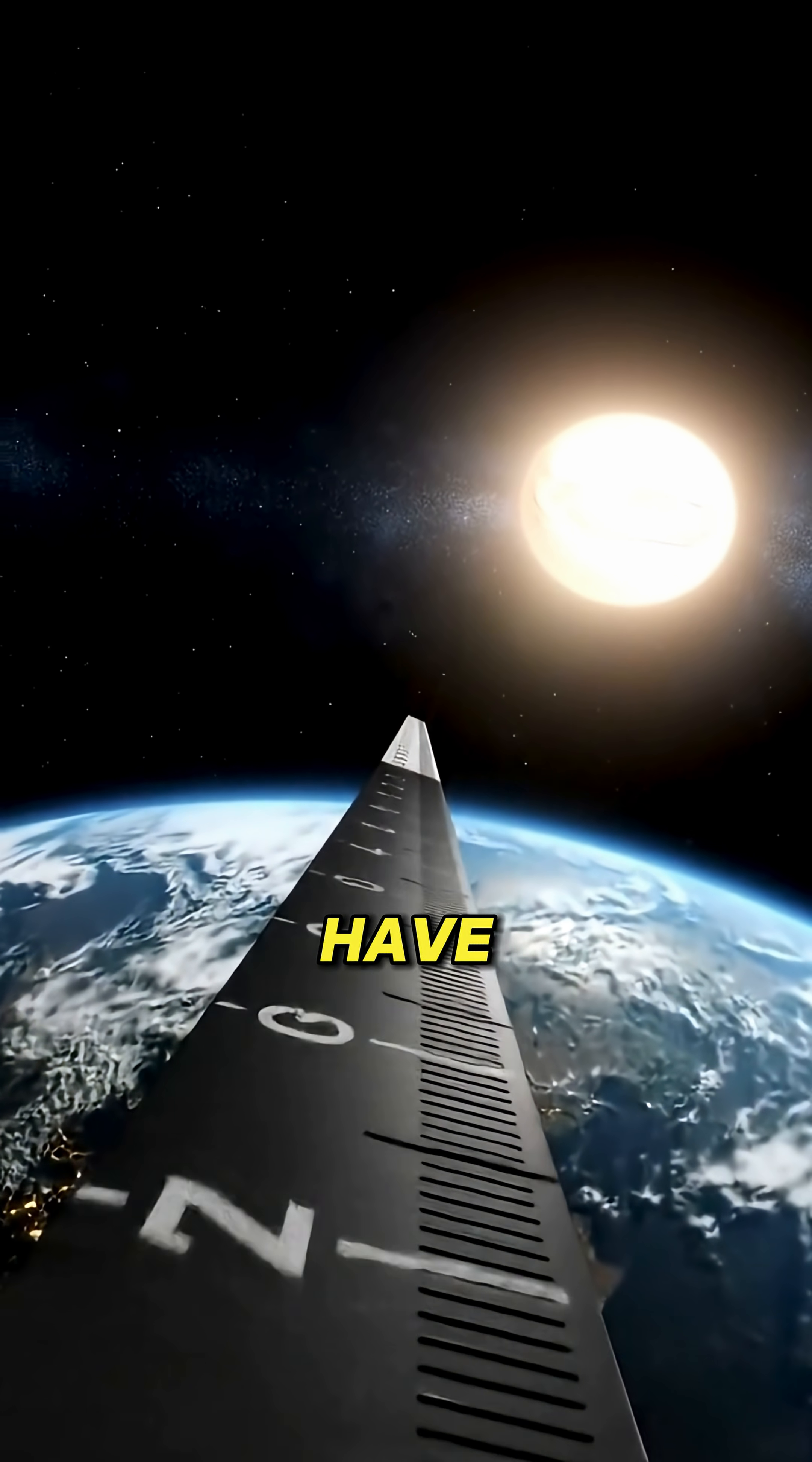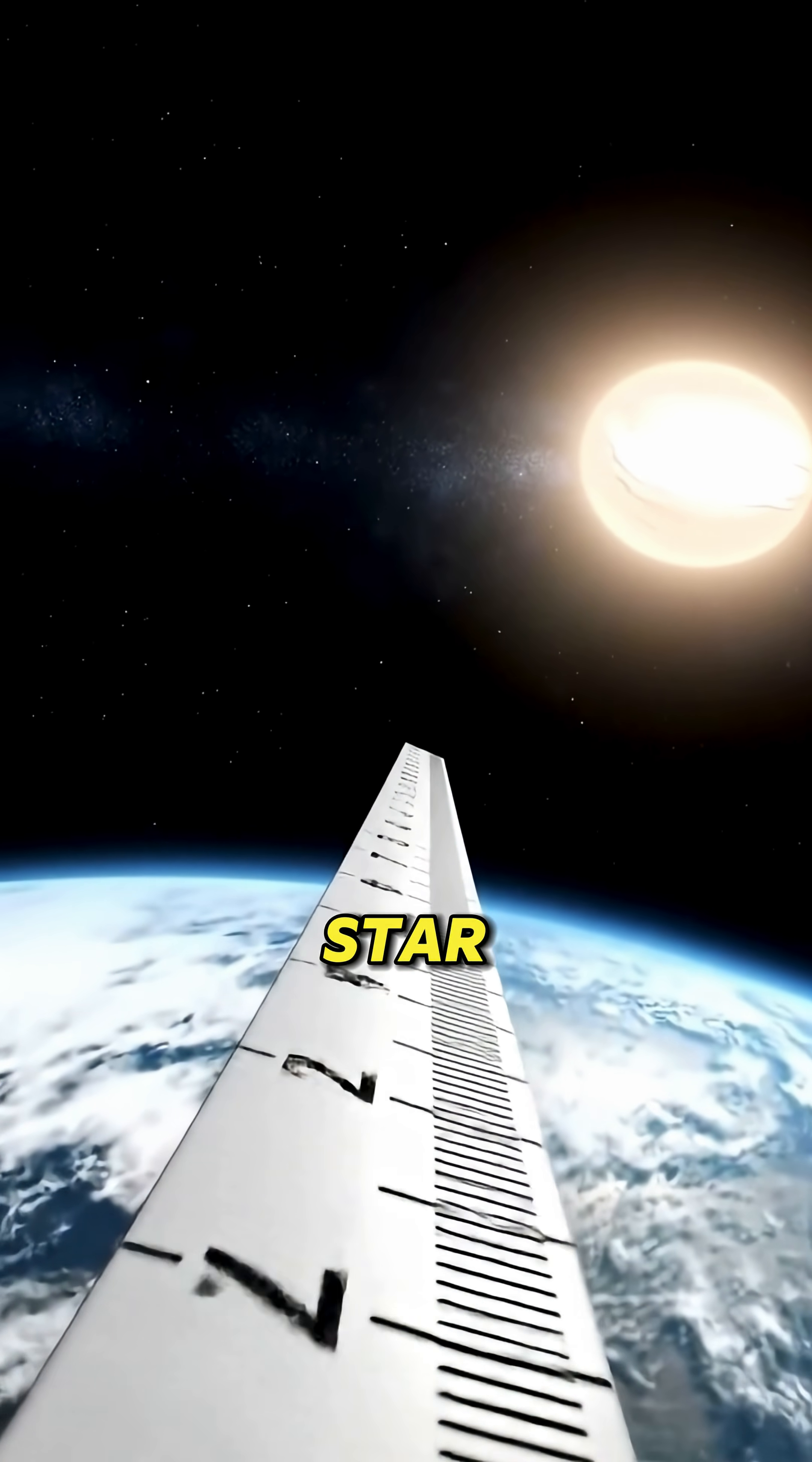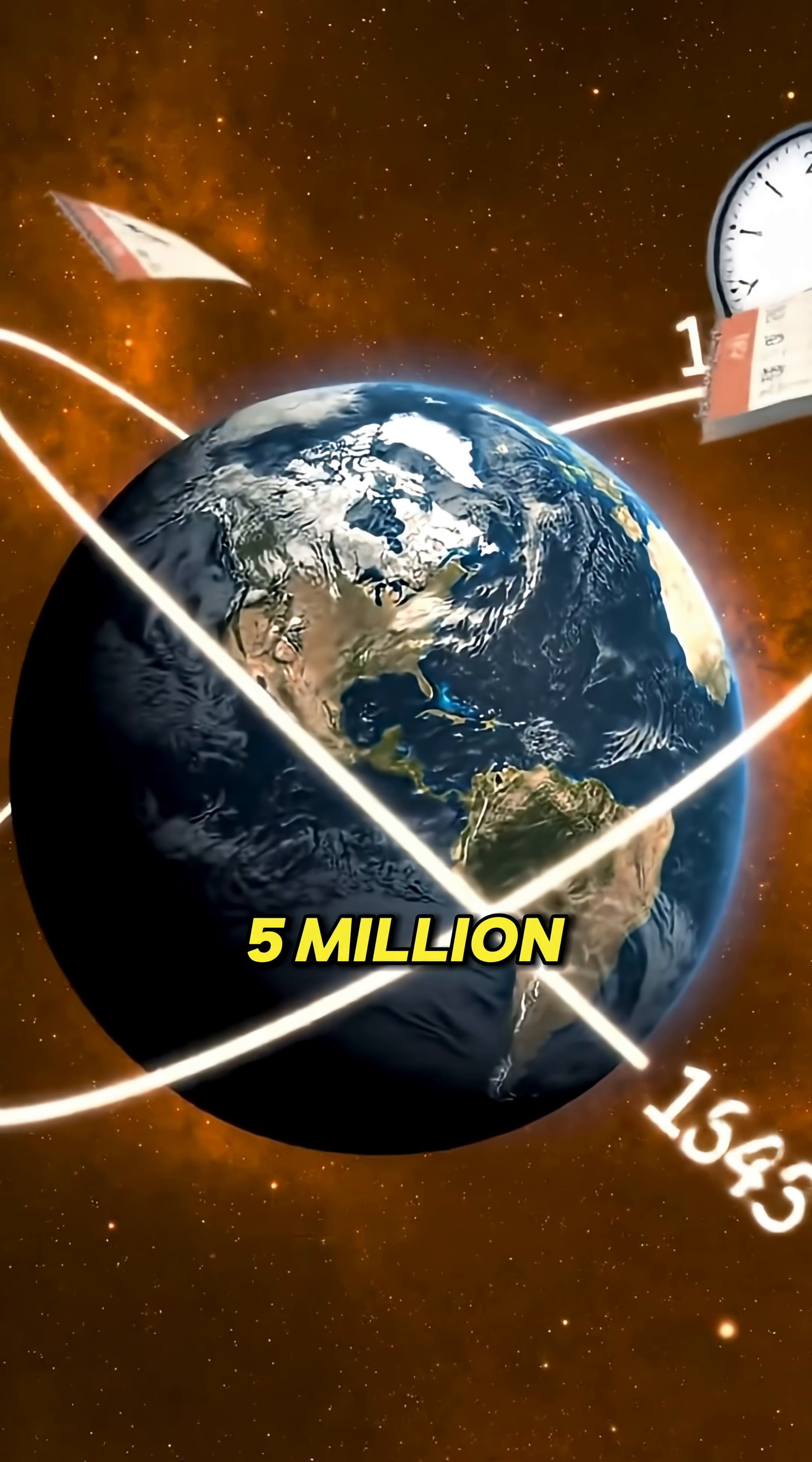To stay alive, Earth would have to orbit so far away, 29 light years from its own star. From that distance, a single year wouldn't last 365 days. It would last over 5 million years.